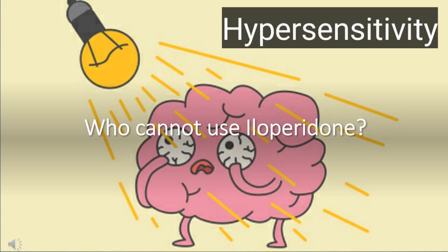Iloperidone is contraindicated in patients with known hypersensitivity to the agent or any component of the formulation. Elderly patients with dementia-related psychosis are at a higher risk of cerebrovascular adverse events — i.e., stroke, TIA — and death with atypical antipsychotic drugs.